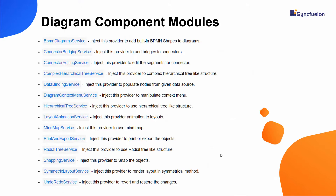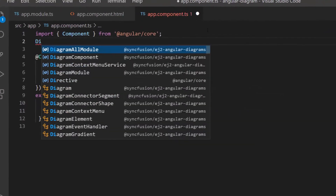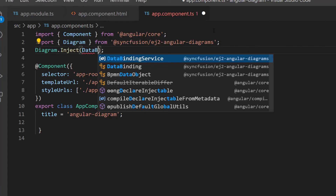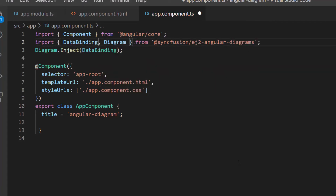The Angular diagram features are separated into individual modules. So if I want to bind the data source and set a specific layout type in the diagram, I need to inject their required services. Now I am going to bind a JSON data source to the diagram component. First, I need to inject the data binding module from the Syncfusion diagram package.